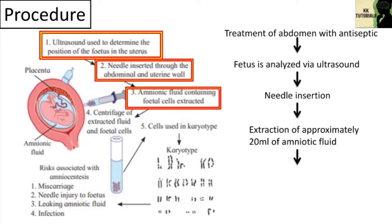This procedure can be performed with a single needle or a double needle technique based on individualized patient factors and physician preference. From the 20 ml of amniotic fluid, the first 2 ml is typically discarded due to mixture with maternal blood cells, to ensure high quality fluid sampling.